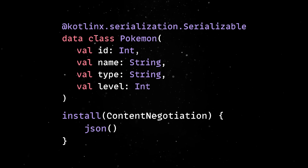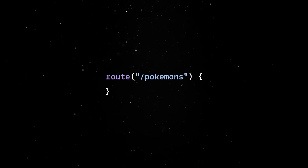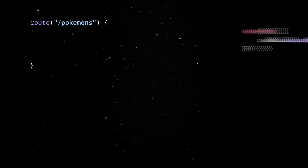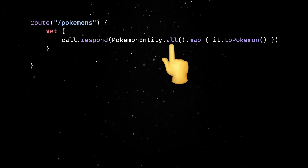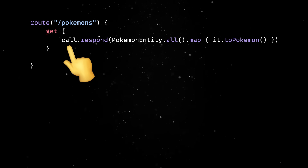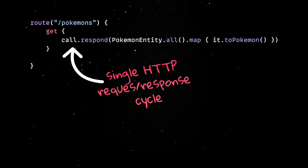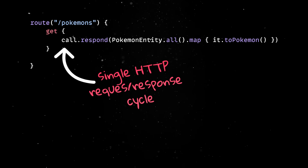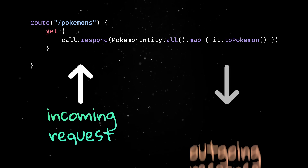With all the boilerplate code out of the way, we can now work on the actual API. The fun part is that Ktor's routing DSL makes this feel more like writing Kotlin functions than configuring routes. The most basic path will simply return all entities saved in the database, and thanks to Exposed, we don't have to worry about raw SQL or manual mapping. Note the call object, which is an instance of ApplicationCall — the core object that represents a single HTTP request/response cycle. Every time someone hits your API, Ktor gives you access to the call object inside your route handler.